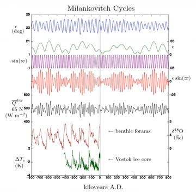Greater eccentricity increases the variation in the Earth's orbital velocity. However, currently the Earth's orbit is becoming less eccentric. This will make the seasons more similar in length.